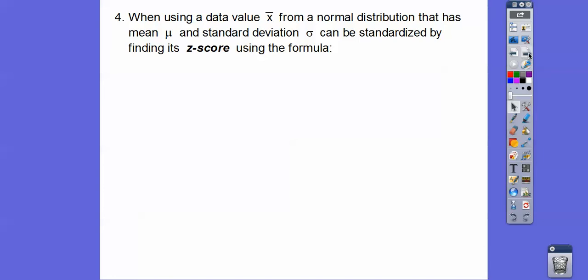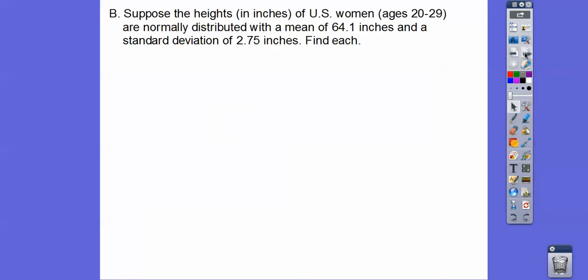So when we're using data values for x-bar, which is our sample mean, from a normal distribution that has a mean μ, a population mean, and a standard deviation of σ, we can standardize all situations as long as it's normally distributed with this formula. We can get a z-score using this formula. We take the sample mean, and we subtract the population mean, and we divide it by the population standard deviation. And then we just use that table to find the area or percent or probability that's to the left.